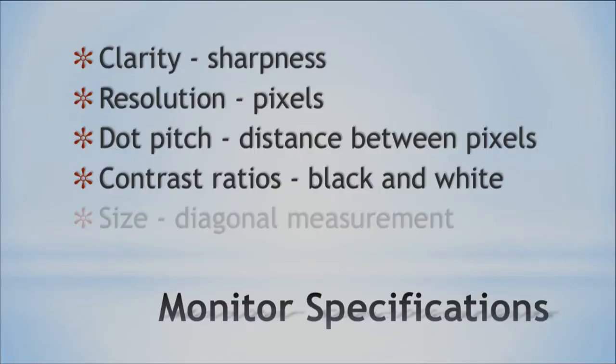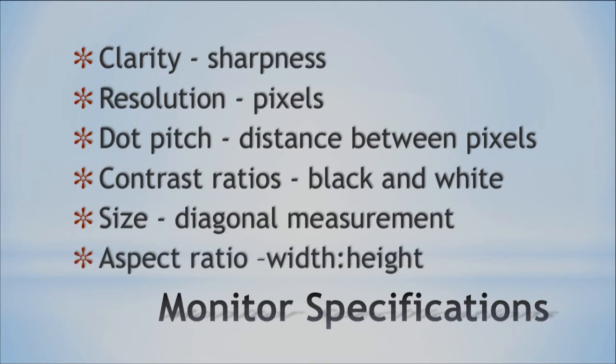Then you have the size, which you're probably more familiar with — it's the diagonal measurement of your monitor. And you have the aspect ratio, because now we see that some TVs or monitors are much wider, so what is the ratio between the width and the height? Those are the characteristics that determine how you can see something and see it differently and better.